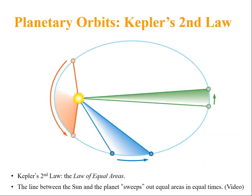Now, coming to Kepler's second law, it states that equal areas in equal times. This is called the law of equal areas. The line between the sun and the planet sweeps out equal areas in equal time.